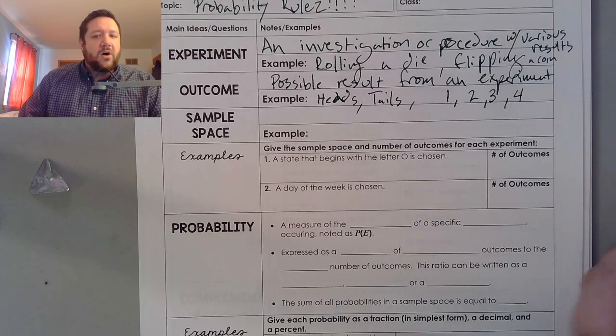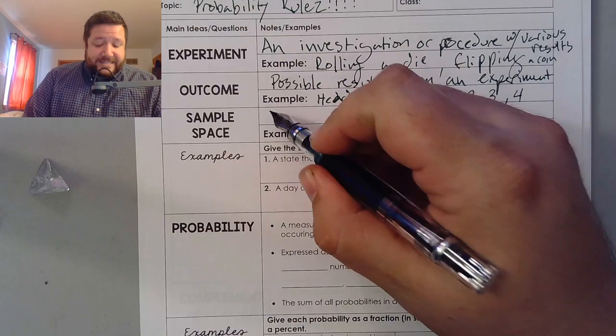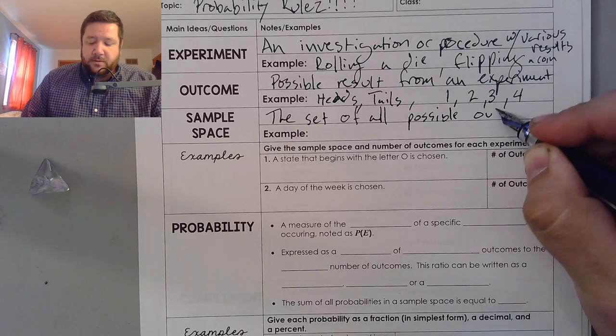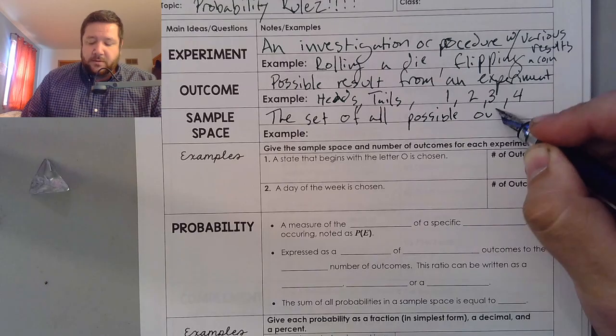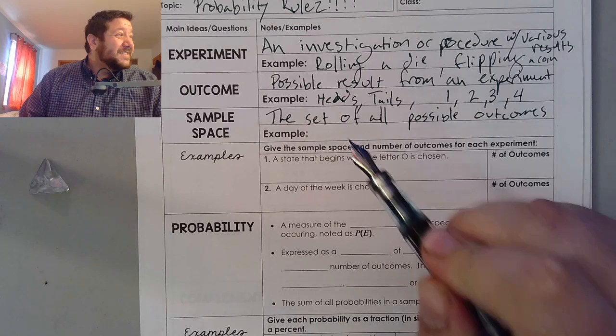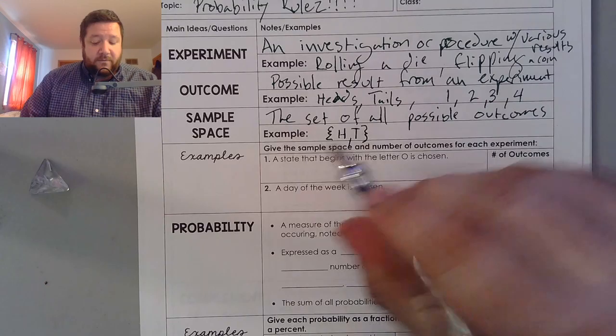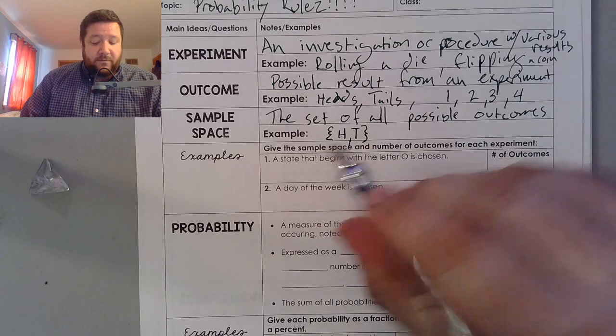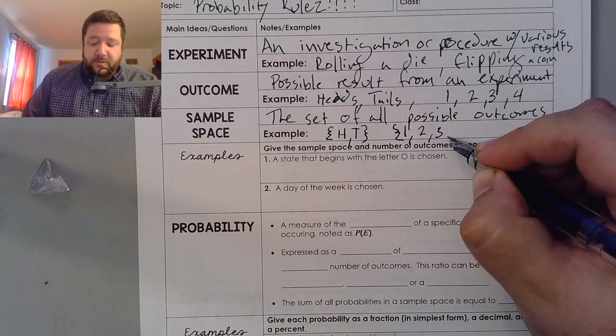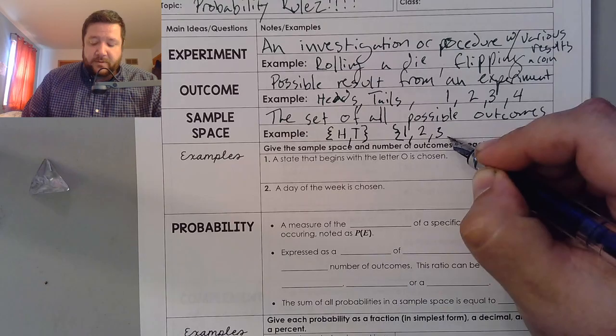Now, the sample space is something that's going to be a little bit different for you. What the sample space is, is when we're doing probability, we want to know what are all of the possible outcomes. So, the mathematical term for this is actually the set of all possible outcomes.